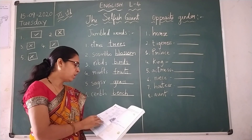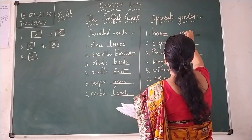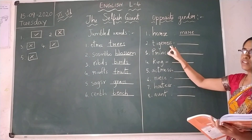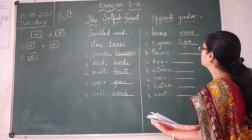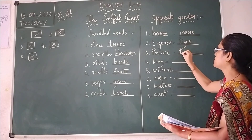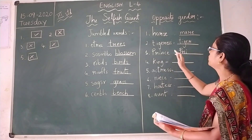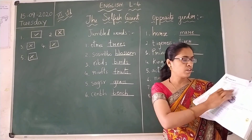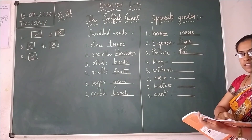First one is horse — the opposite gender is mare. Second one is tigress — you should write tiger. Third one is prince — you should write princess. Fourth one is king — what is the opposite for king? Queen. I am writing the answers so you can easily fill in the boxes.